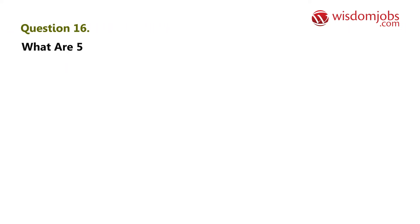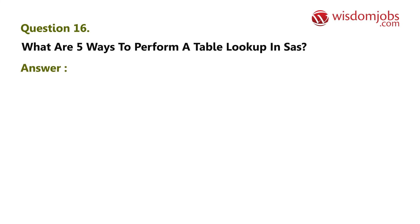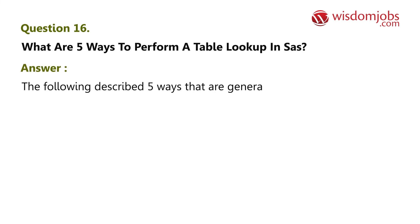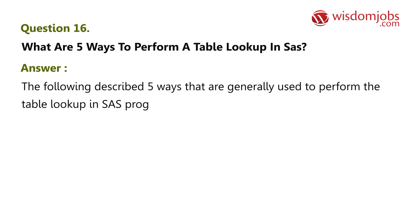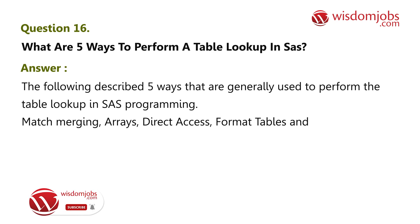Question 16: What are the five ways to perform a table lookup in SAS? Answer: The following five ways are generally used to perform table lookups in SAS programming: match merging, arrays, direct access, format tables, and PROC SQL.